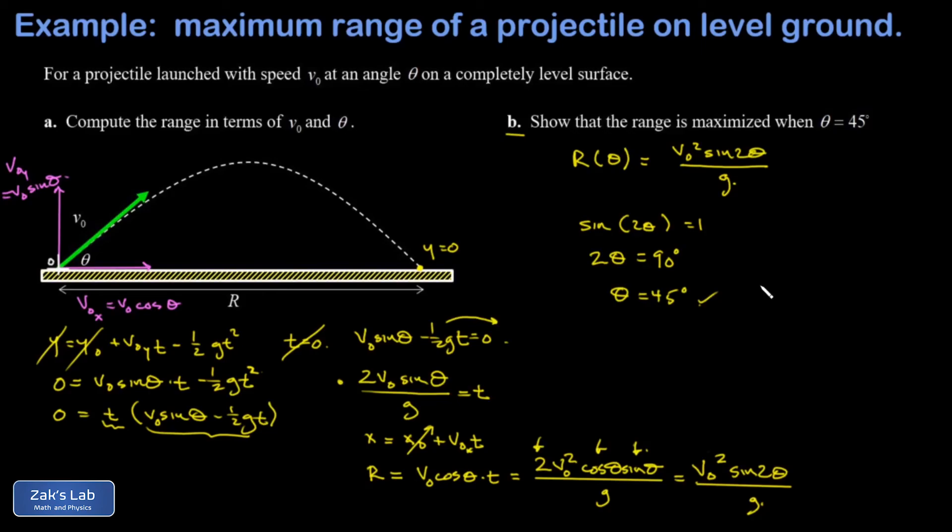Remember: if you start launching projectiles off a cliff or up onto a hill, that changes the angle that maximizes the range. The beautiful answer of 45 degrees only holds when the surface is completely level. Check out another video by clicking one of the links, or explore dozens of physics and math playlists. Leave your questions and comments below and I'll get back to you within 24 hours. Thanks for watching, and best of luck on your math and physics journey.